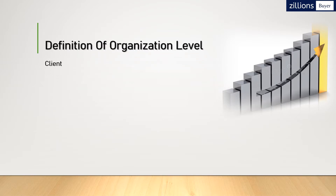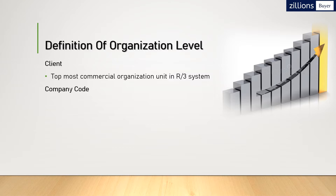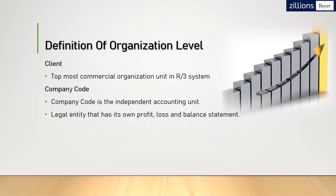Now let's look at the definition of each organization level. The client is an independent accounting unit in SAP — this is our client definition. The company code is also an independent unit responsible for legal financial reporting, including profit and loss statements and balance sheets. Legal entities come under the company code.